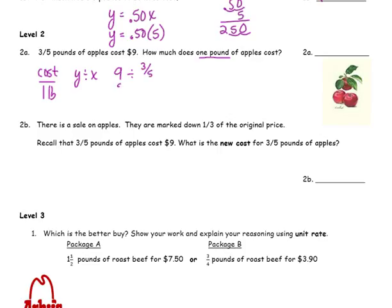Change nine to a fraction. Multiply by the reciprocal of the second number. Simplify first — divide by three and divide by three. Three goes into nine three times; three goes into three one time. Multiply your remaining numerators, you get 15. Multiply your remaining denominators, you get one. And the answer is 15 — one pound of apples costs $15.